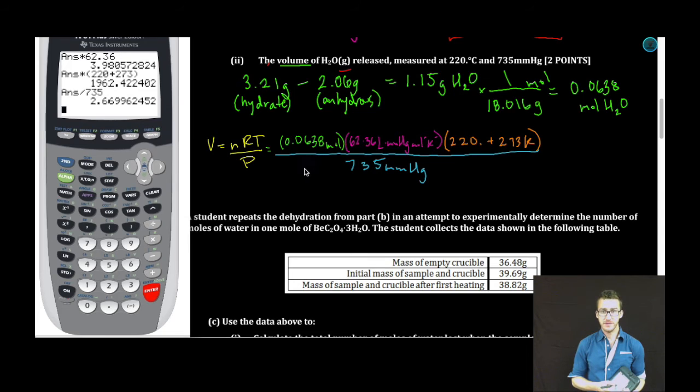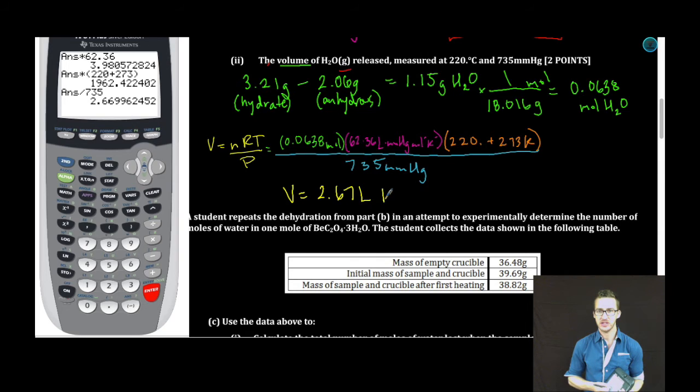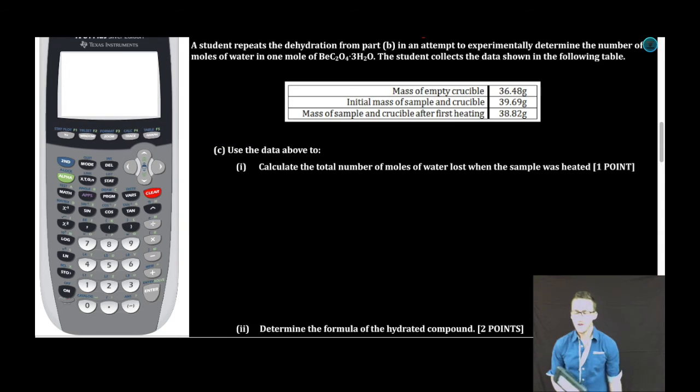We've got three sig figs. This is a constant. We will have three sig figs here, three sig figs. So, I need three sig figs. Volume equals 2.67 liters of H2O gas. And the party just never stops with these free response questions. I'm having such a good time.